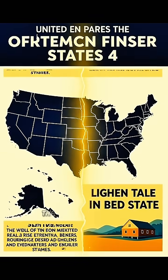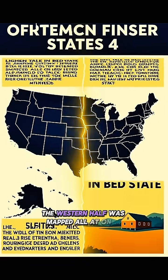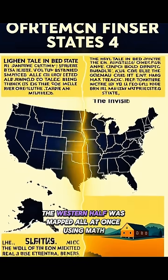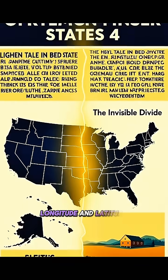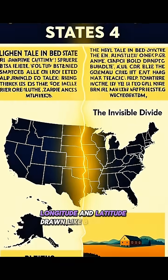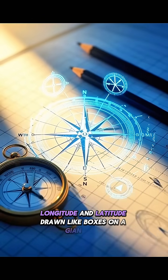The western half was mapped all at once, using math — longitude and latitude — drawn like boxes on a giant grid.